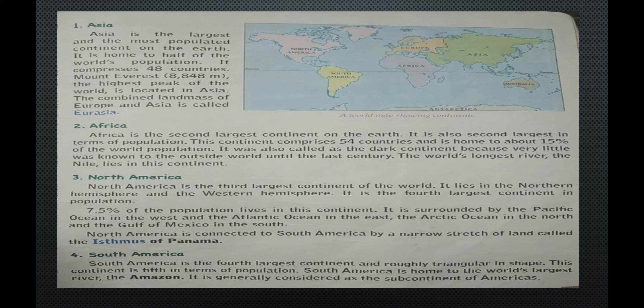North America is the third largest continent of the world. It lies in the Northern and Western Hemispheres and is the fourth largest continent in terms of population, with 7.5% of the world's population. It is surrounded by the Pacific Ocean in the west, the Atlantic Ocean in the east, the Arctic Ocean in the north and the Gulf of Mexico in the south. North America is connected to South America by a narrow stretch of land called the Isthmus of Panama.